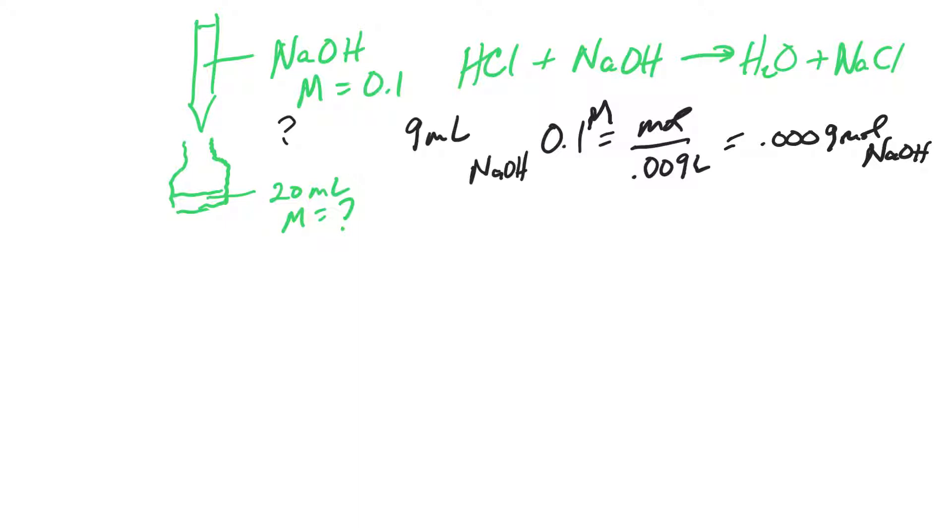I go back to the balanced equation and ask, what is the relationship? What's the ratio? They're both ones because I balanced this equation. So it's 1 mole to 1 mole. If it's 1:1, then 1 mole of HCl is to 1 mole of NaOH as what moles of HCl is to 0.0009 moles of NaOH. Well, it's going to be the same. It'll be 0.0009.